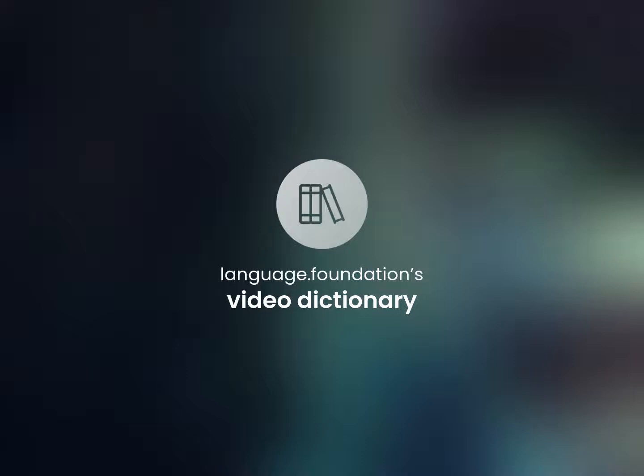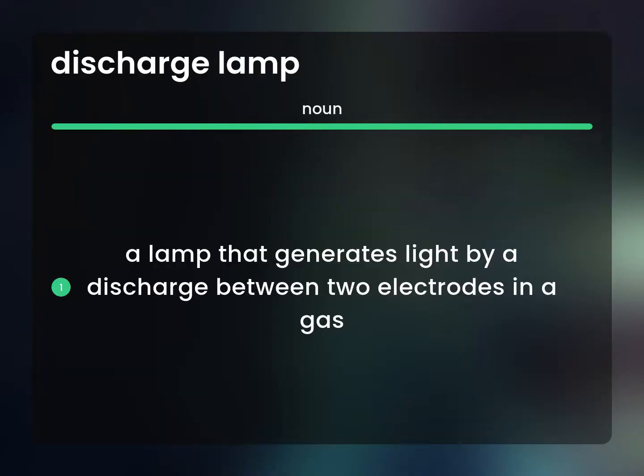Language.Foundation's Video Dictionary — helping you achieve understanding. A lamp that generates light by a discharge between two electrodes in a gas.